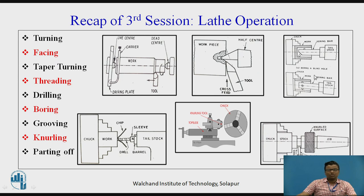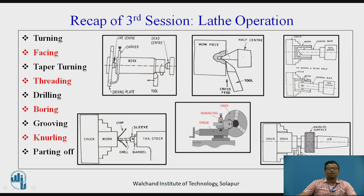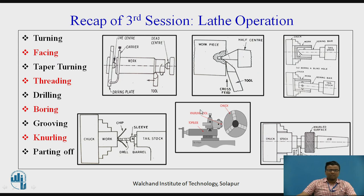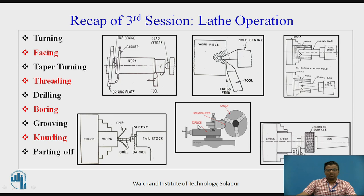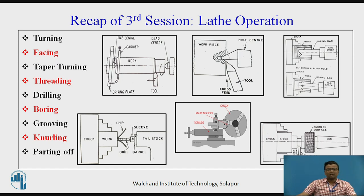This is the boring operation, which is an internal cutting operation where you want to enlarge a hole already drilled. A boring bar is used with the boring tool attached to it. This is the drilling operation, used when you want to provide a hole on the workpiece. You can also see the knurling tool animation and the parting off operation, which is used for separating the workpiece from the raw material.